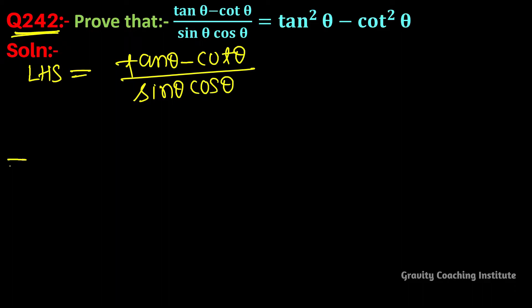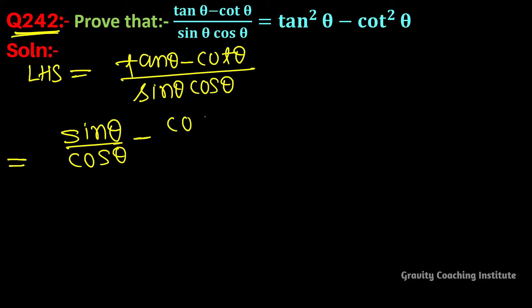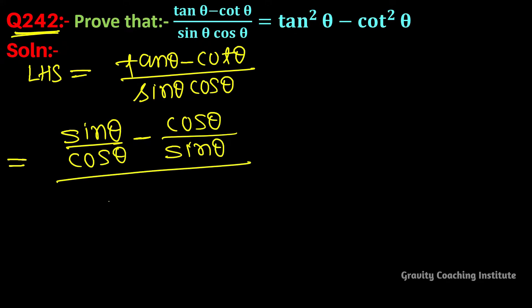We will change tan θ into (sin θ / cos θ) and cot θ into (cos θ / sin θ), placed over sin θ · cos θ in the denominator.